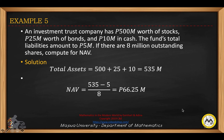Let's have an example. An investment trust company has $500 million worth of stocks, $25 million worth of bonds, and $10 million in cash. The fund's total liabilities amount to $5 million. If there are 8 million outstanding shares, compute for the net asset value.